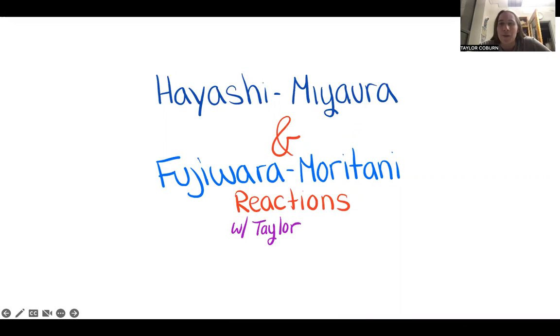Hey guys, it's Taylor, and you're watching Rosenberg After Hours, where I camp out in the Pelkey Lab and do my work at the late hours of the night. On this week's episode, we have two very challenging to pronounce organometallic name reactions called the Hayashi-Miyaura and Fujiwara-Moritani reactions.